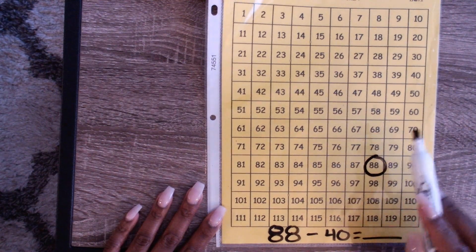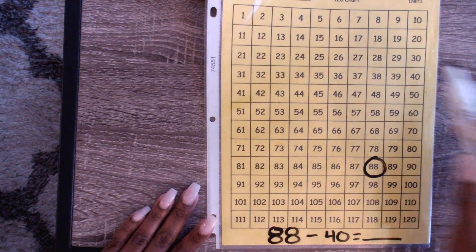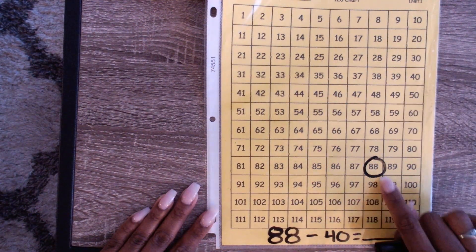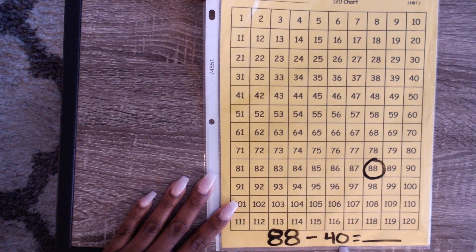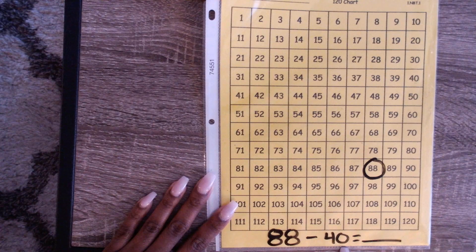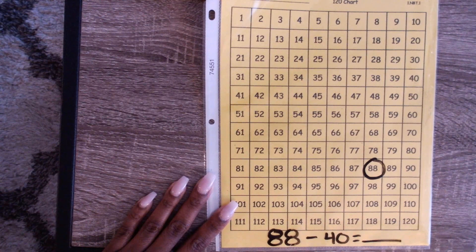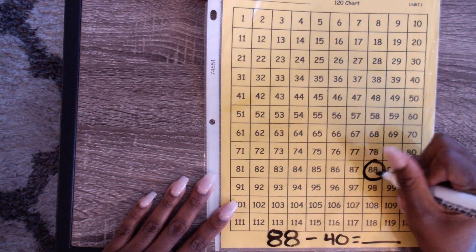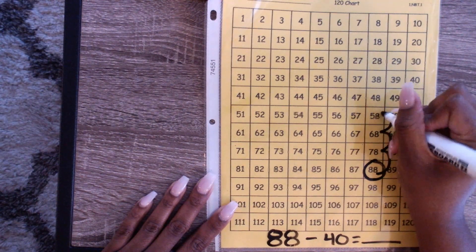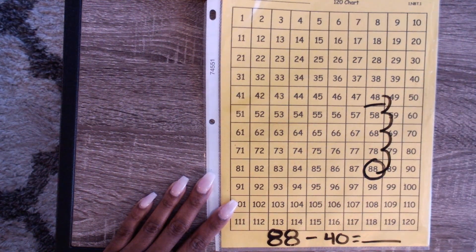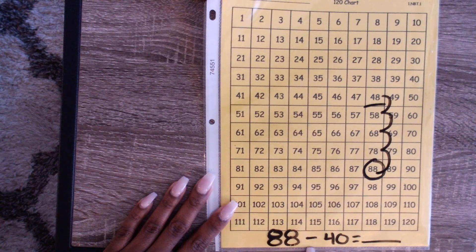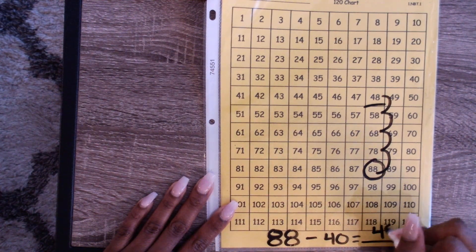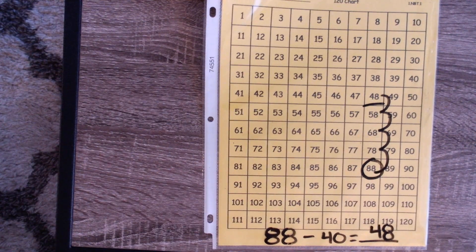Minus 40. When you're taking away, you're backing it up. Back it on up. We're gonna back up 4 tens. Remember, there's no ones in the ones place, so we're not changing the one digit number. It's going to be the same. Watch how cool this is. Gotta back it up 4 times, counting by tens: 10, 20, 30, 40. Where'd I land? 48. So we know that 88 minus 40 equals 48.